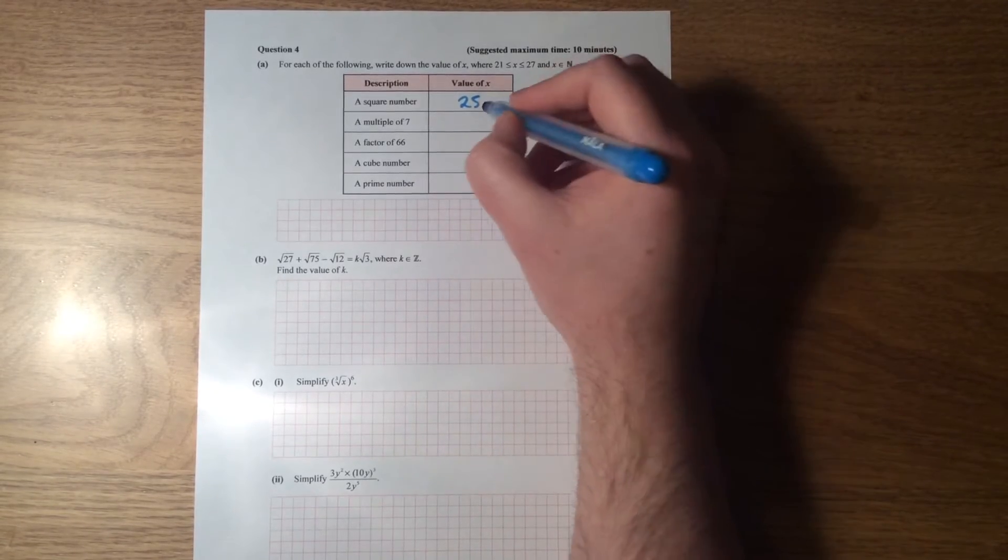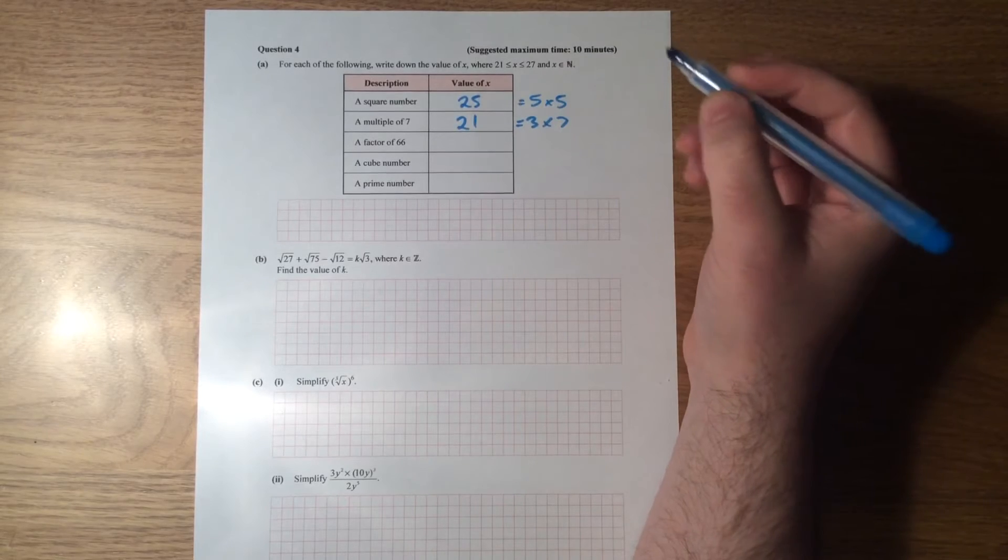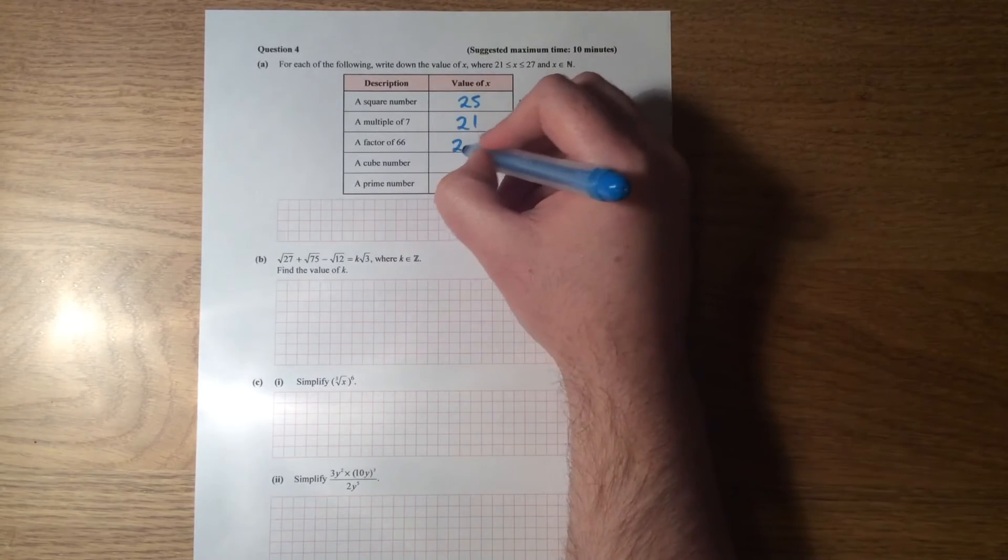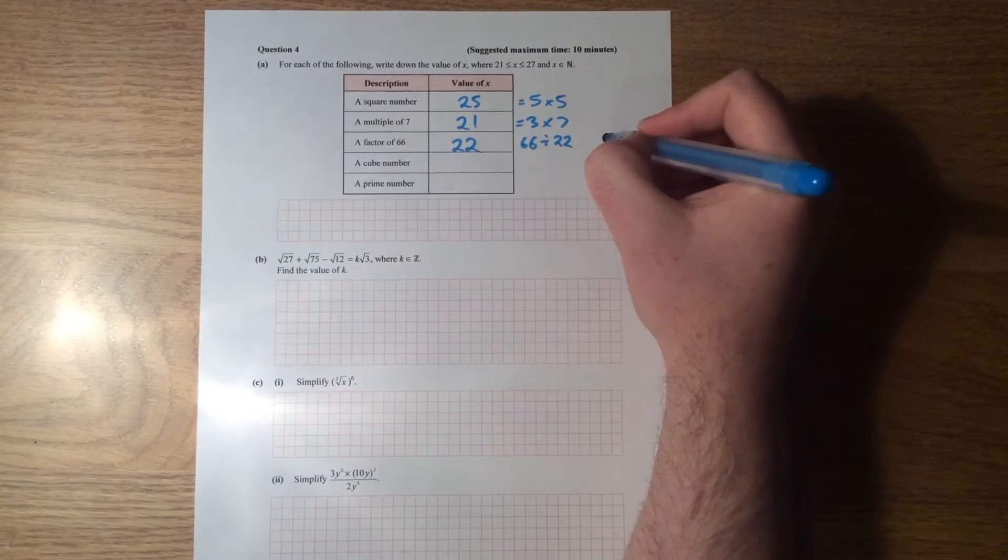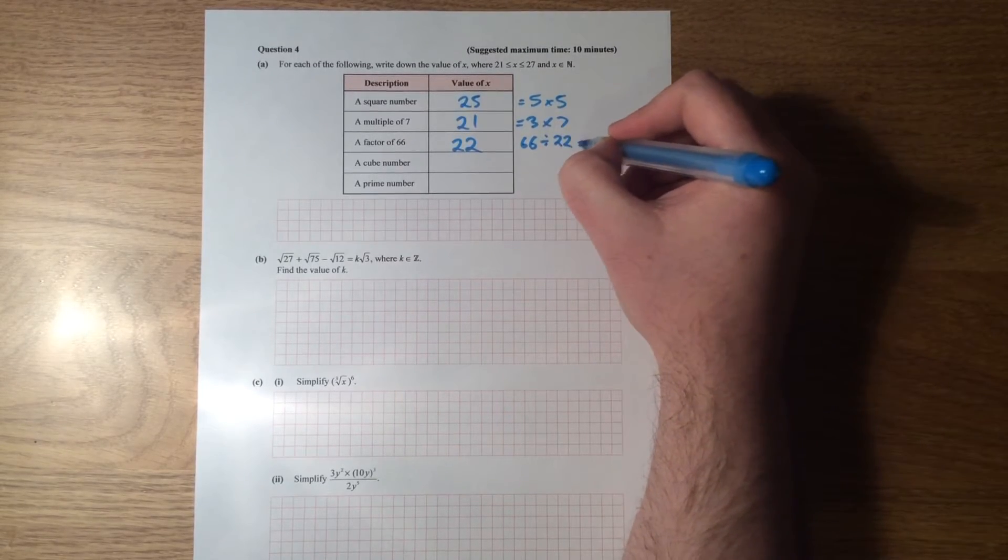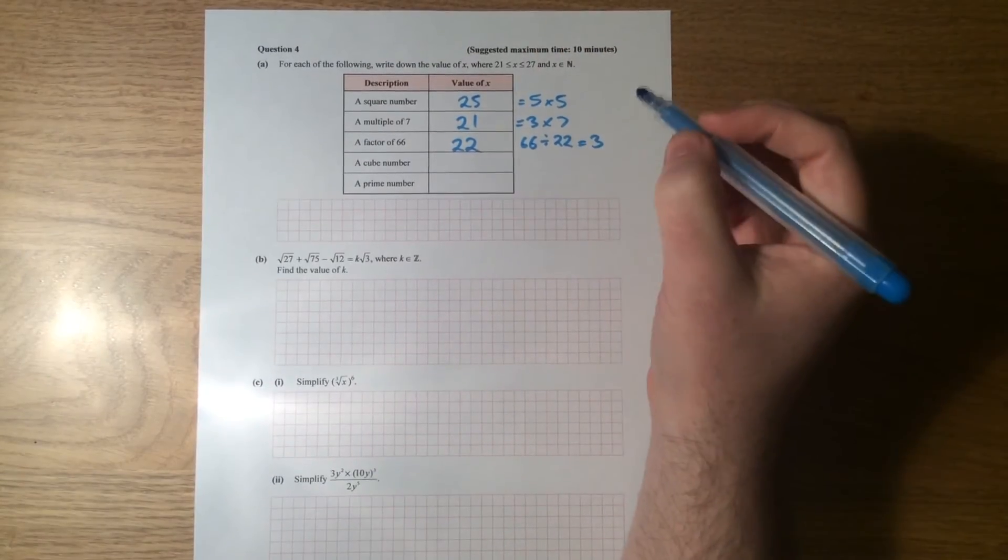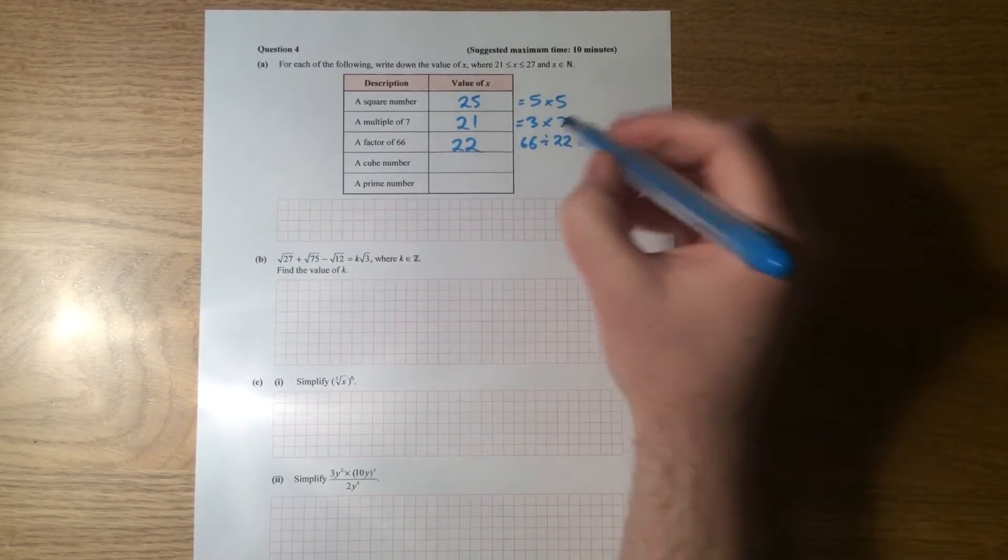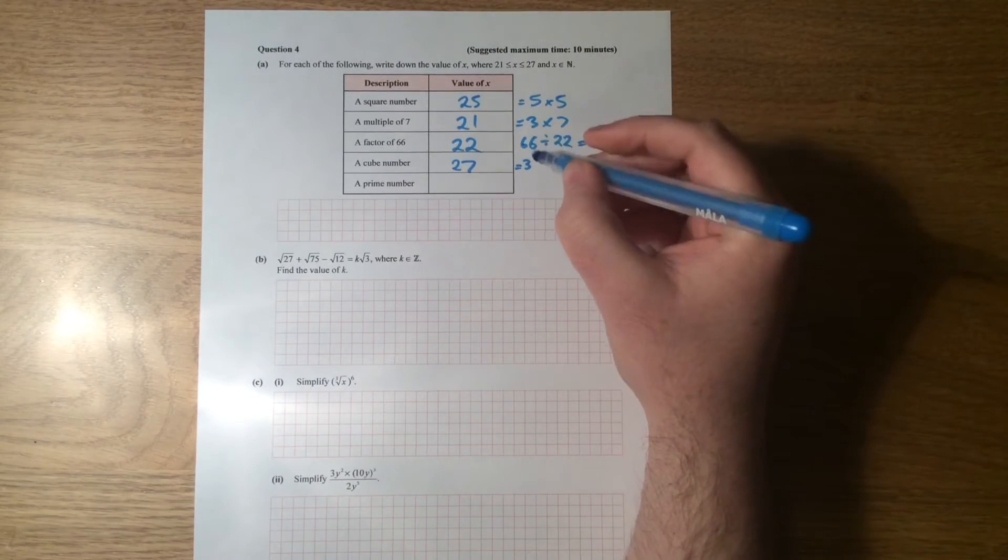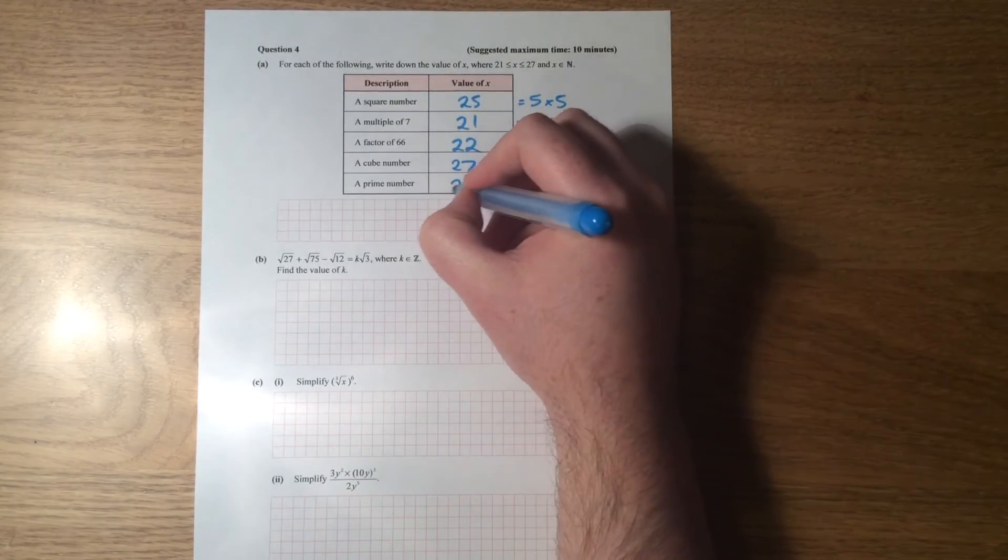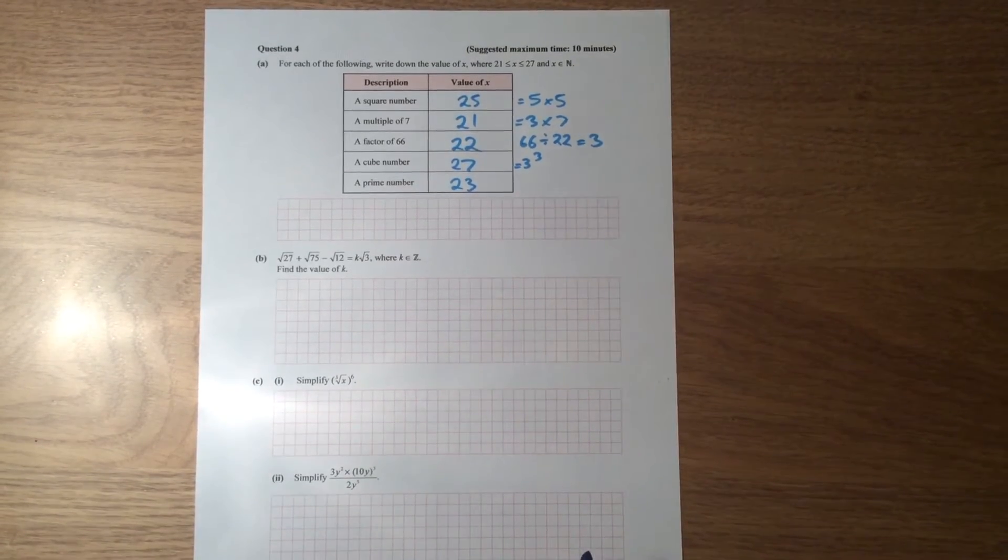A multiple of 7, well, that's 21, because 3 times 7 is equal to 21. A factor of 66 is 22, because 66 divided by 22 gives me a whole number, which is 3. Okay, therefore it's a factor. A cube number is a number by a number by a number. So in this case, it's 3 by 3 by 3, so 27, which is 3 cubed. Okay, and then finally, a prime number is 23, a number that can only be divided by itself and the number 1. So there are the list of numbers there.